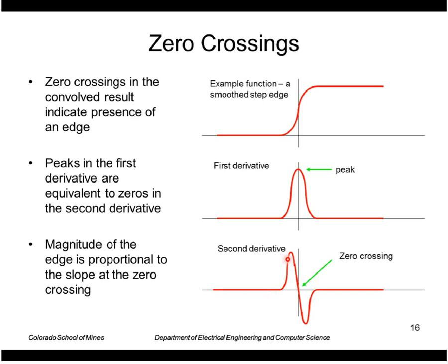A second derivative would give us a zero crossing because it's the derivative of the first derivative. So it rises to the left here, zero at the peak, and then is negative to the right.